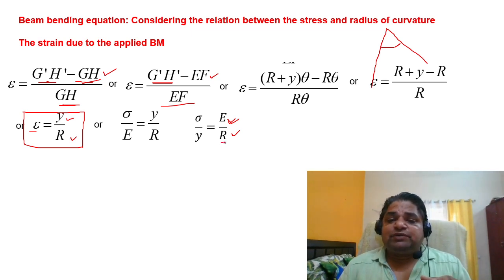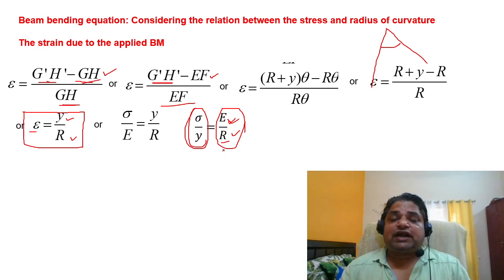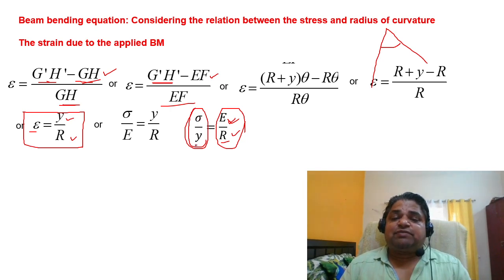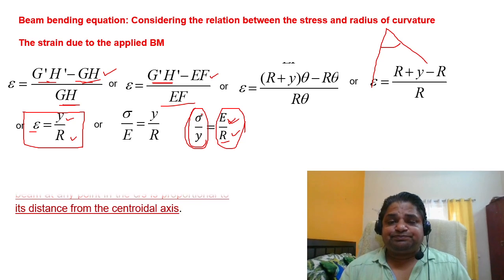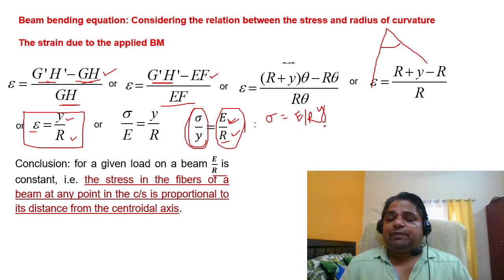We got one part of the equation: σ/y = E/R. Regarding the neutral plane — if I slice the beam into two halves with respect to the cross section, the line lying in that central plane is the neutral axis. Various cross-section shapes are used: rectangle, circle, I-section, T-section. Whatever the shape, according to our assumption, every transverse cross section must be symmetric about the neutral axis.